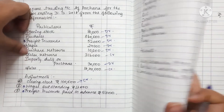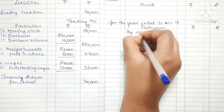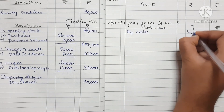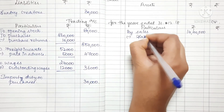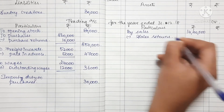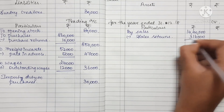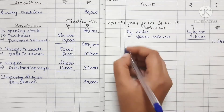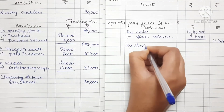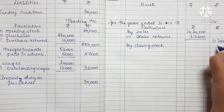On the credit side, sales: 14,00,000. Minus sales return: sales return is 3,16,000 (likely 76,000), giving net sales of 11,24,000. By closing stock: closing stock amount is 1,00,000.